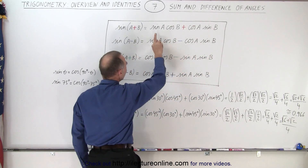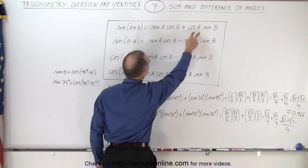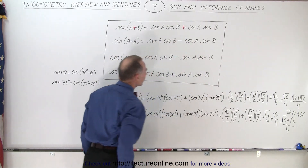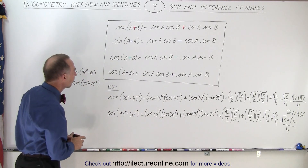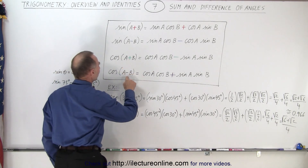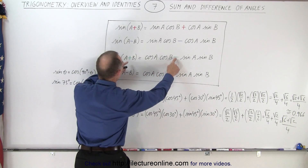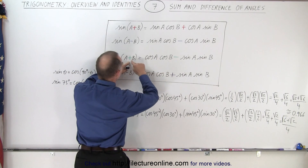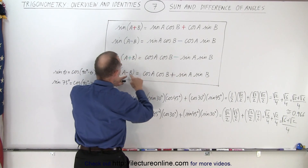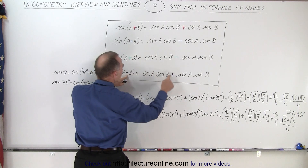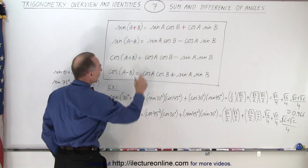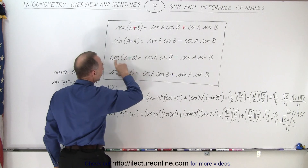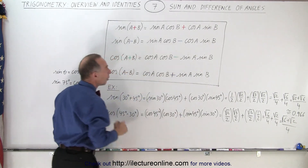We simply switch the sines and the cosines here and here. When we're dealing with the cosines, we have the sum and the difference of two angles, but notice that the signs are now opposite. If you have a plus here, this becomes negative, and a negative here becomes plus. That's different from the sine. In the sine the signs match; in the cosines they're the opposite signs.